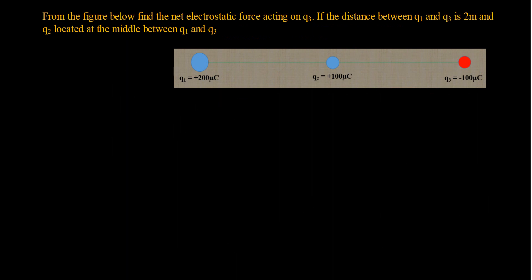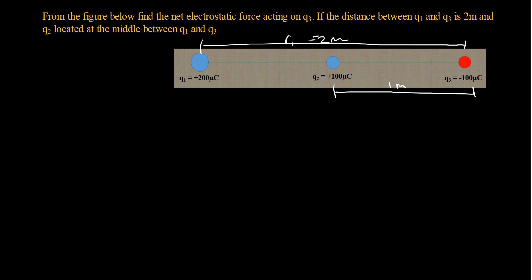Now let's move to the second example. It looks similar but is set up differently. I need to find the net electrostatic force acting on q3 (shown in red). The distance between q1 and q3 is 2 meters, and q2 is located exactly at the midpoint between q1 and q3, giving a distance of 1 meter between q2 and q3. I'll call these distances r1 and r2.